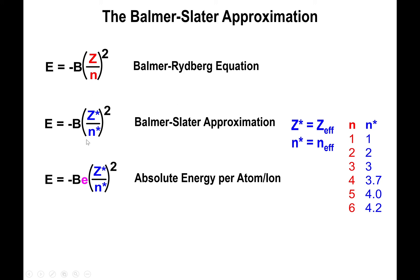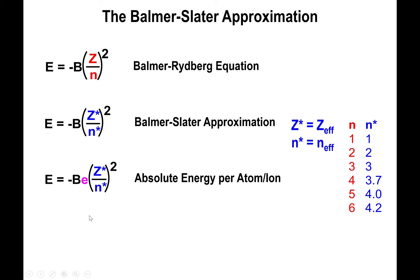The Balmer-Slater approximation applies to only one electron at a time, since the original Balmer-Rydberg equation was only applicable to one-electron systems. So we multiply the approximation by the number of electrons present in the group in question. If we have two electrons in the group, we multiply by two times negative B times Z* over N* squared. The change in energy equals the final minus the initial states of the ionic species.